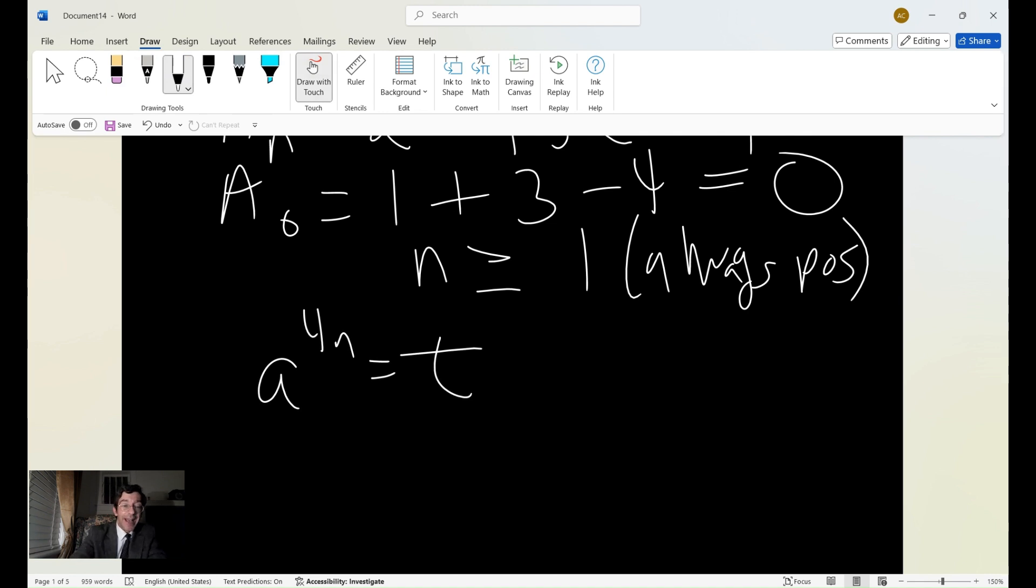and we now get A_n, instead, is equal to t² + 3t - 4. And that's a familiar, that's a second-degree equation, and it means that you can factor it. In this case, we can get (t - 1)(t + 4).